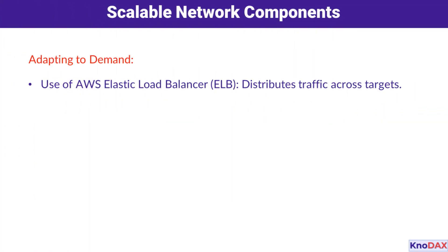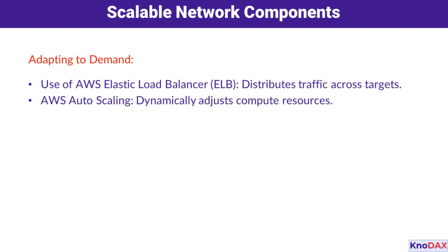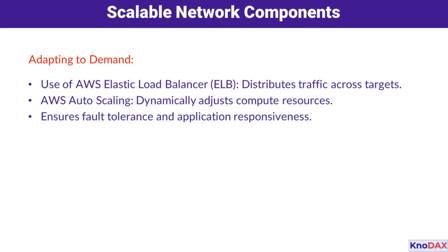Next, let's talk about the tools that enable scalability. Scalable network components, like AWS Elastic Load Balancer, distribute incoming traffic across multiple targets to handle demand efficiently. Combine this with AWS Auto Scaling, which dynamically adjusts compute resources, and you have a network that can grow or shrink as needed. These components ensure your applications stay responsive, even during traffic spikes.